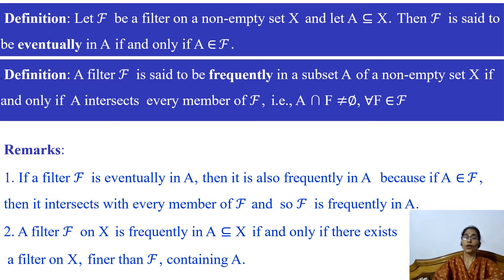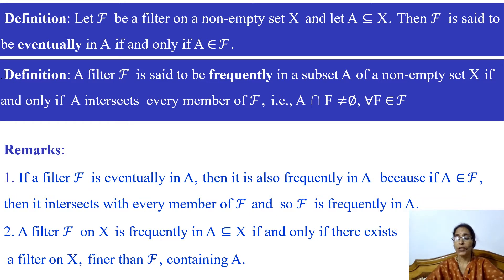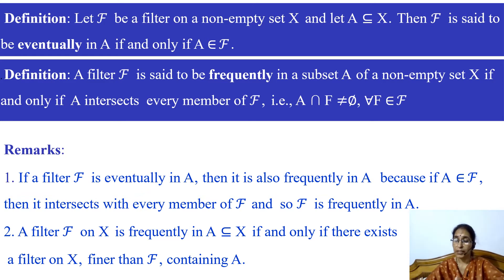Remark two: a filter F on X is frequently in A if and only if there exists a filter on X finer than F containing A. We have proved this result earlier — if any subset of X intersects every member of a filter F, then there exists a filter finer than that filter containing that set.